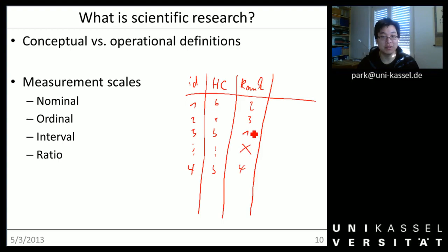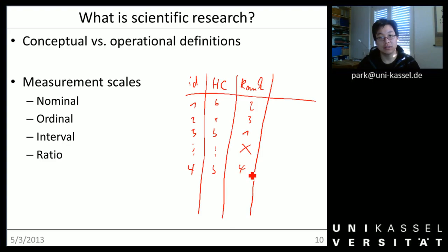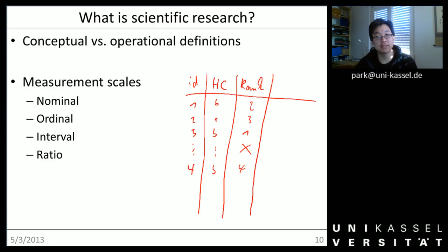We can count how many people were first, two, three, four — one for each. But we can also bring this column into an order. In Excel, you could sort the data and have a ranking. The ranking is all we can do with it. We can say who was first, who was second, who was third. But with these kind of data, we cannot tell how much faster the first person was than the second, or whether this distance is equal between second and third. We can only do a ranking, but we cannot say anything about the differences between the ranks.